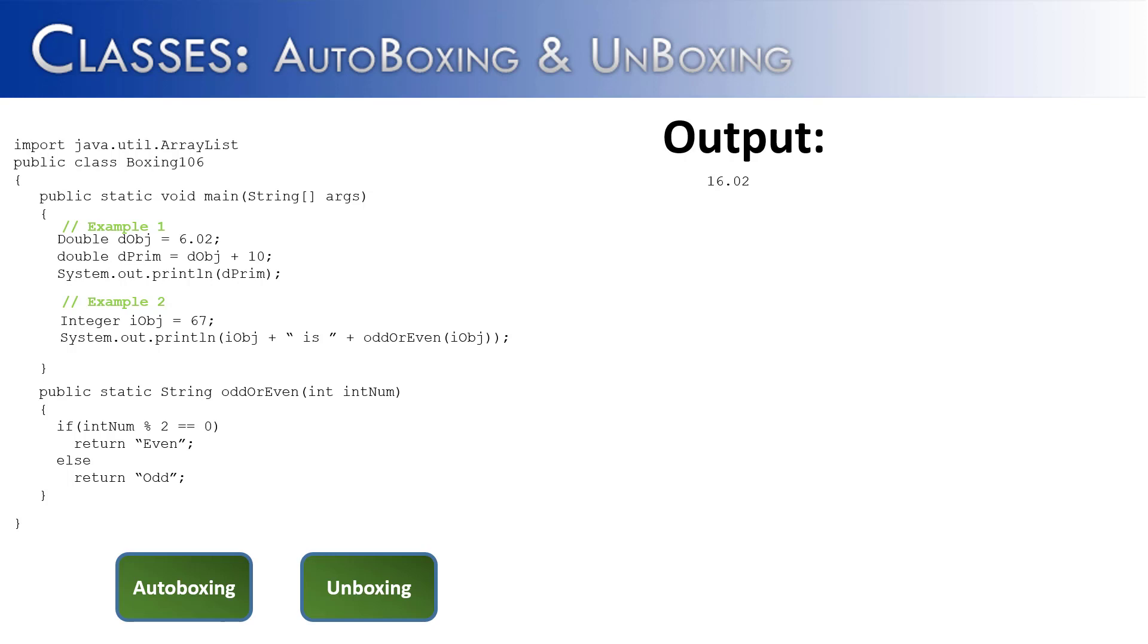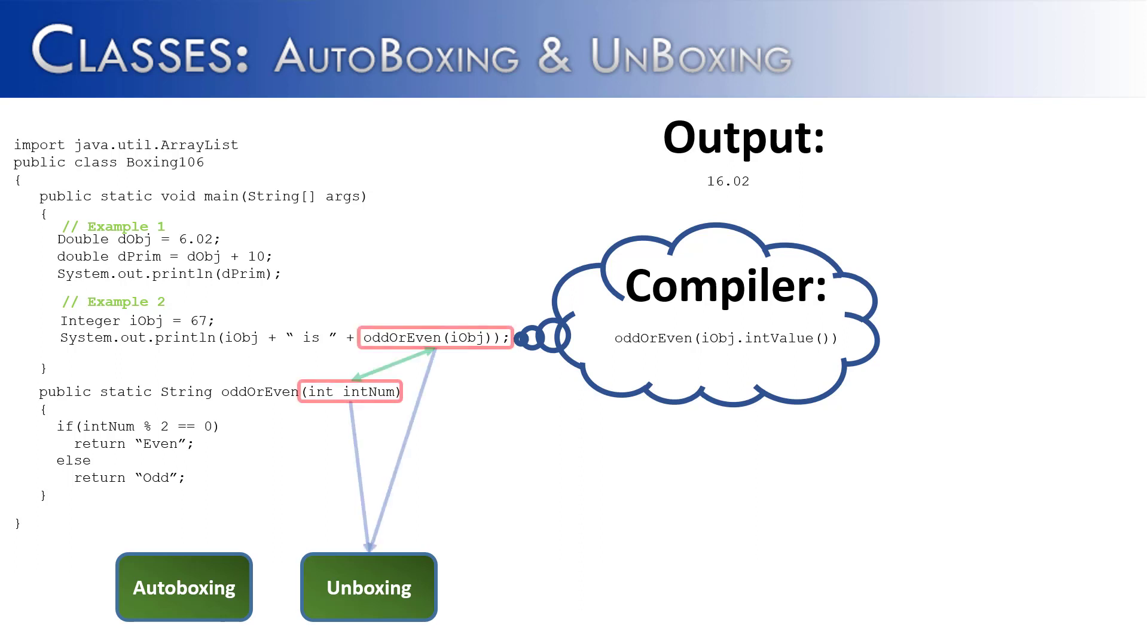And it's just going to determine whether the number is odd or even using simple modulus division. So if it modestly divides evenly into 2, we'll return even. Otherwise, we'll return odd. But what I want you to notice is that IOBJ is an integer object. What is oddOrEven expecting? It's expecting a primitive. So you guessed it, what's going to happen is unboxing. OddOrEven is going to, behind the scenes, call the method intValue on IOBJ and IOBJ is going to be unwrapped and the primitive 67 is going to be passed to oddOrEven. And this of course is unboxing. And then we'll get the result which says 67 is odd.